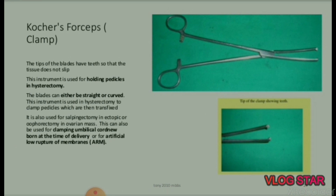Also indicated for LSCS: previous two scars on the uterus. Next is Kocher's forceps: the tips of the blades have teeth so that tissue does not slip. Used for holding pedicles in hysterectomy. The blades can be straight or curved. Used in hysterectomy to clamp pedicles which are then transfixed. Also used for salpingectomy in ectopic pregnancy or oophorectomy in ovarian pathology, clamping the umbilical cord, and artificial rupture of membranes.